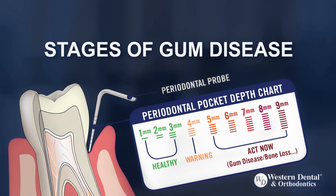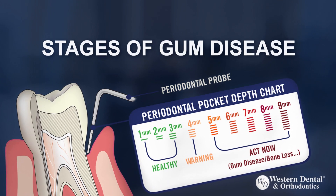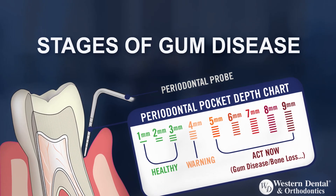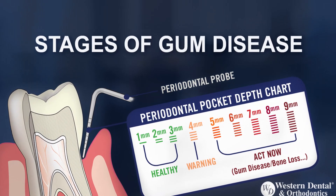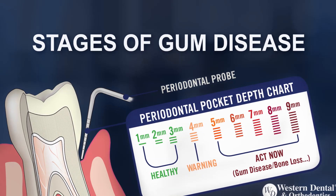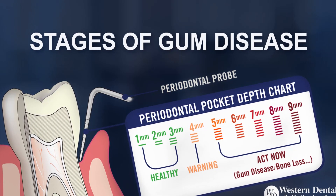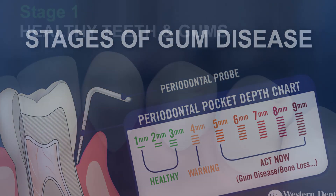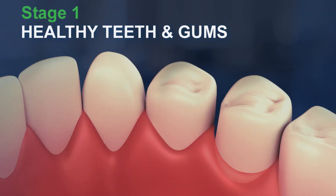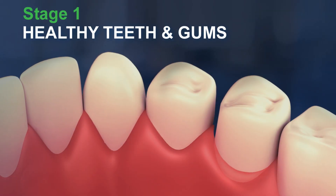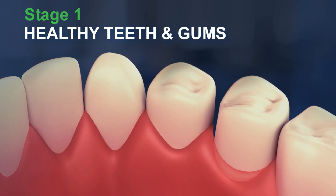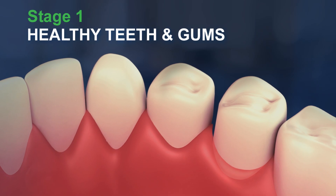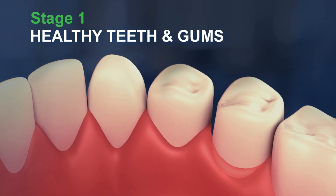Gum disease, or periodontitis, is present in 75% of the adult population and can exist in varying stages of severity. The presence of gum disease is determined during a routine periodontal exam, which includes a gentle probing of the area between teeth and gums.